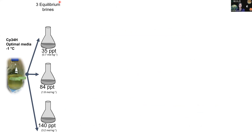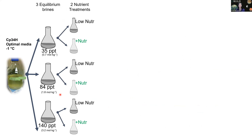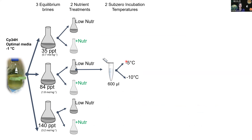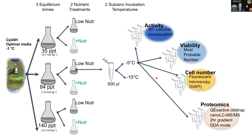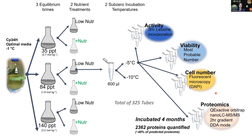For the experiment, we grew Colwellia psychrerythraea 34H (CP34H) in optimal media at negative one degree Celsius, then transferred it to three different salinities mimicking equilibrium brines at negative one, negative five, and negative ten degrees. These were further divided into low-nutrient versus replete-nutrient conditions, then incubated at negative five and negative ten degrees Celsius. Each condition had five bioreplicates; we tracked activity, viability, and cell abundance. At four months we collected samples for proteomics analysis on a commercial mass spectrometer, yielding a total of 320–325 tubes. We ultimately identified 2,362 proteins and quantified their relative abundances across all conditions.